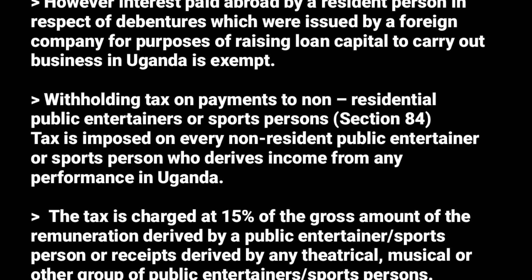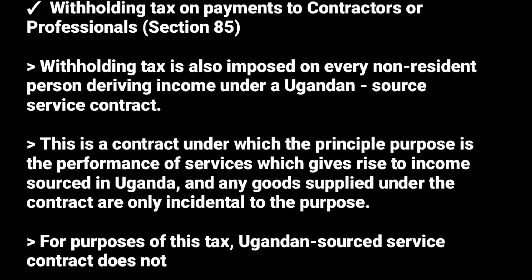Looking at withholding tax for non-resident individuals — first, we have public entertainers or sports persons. Tax is imposed on every non-resident public entertainer or sports person who derives income from any performance in Uganda. Any musician, sports person, comedian, or public entertainer that comes to Uganda is supposed to pay withholding tax at the source at a rate of 15%.